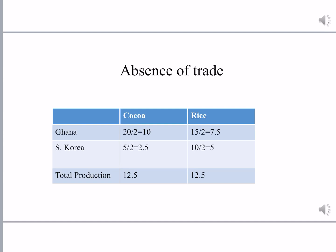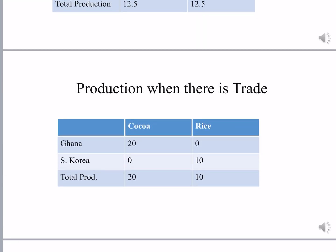Total production without trade is 12.5 tons of cocoa and 12.5 tons of rice. When trade occurs, Ghana specializes in cocoa, using all its resources, producing 20 tons of cocoa and zero rice. South Korea specializes in rice, using all its resources, producing zero cocoa and 10 tons of rice. So total production with trade is 20 tons of cocoa and 10 tons of rice.